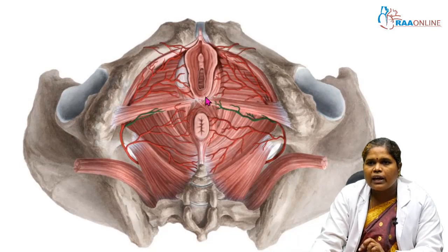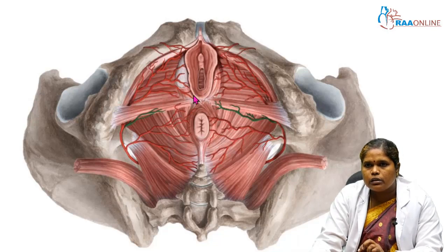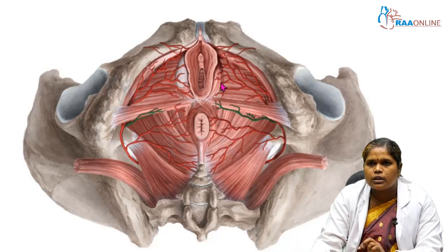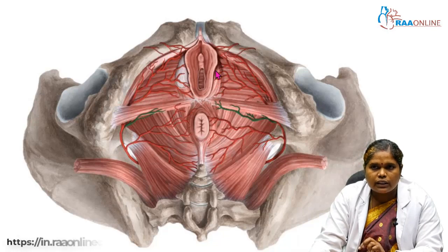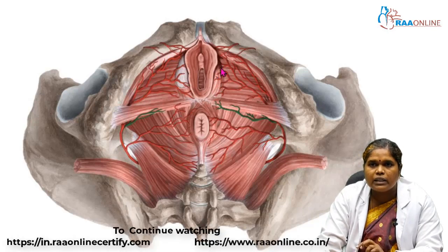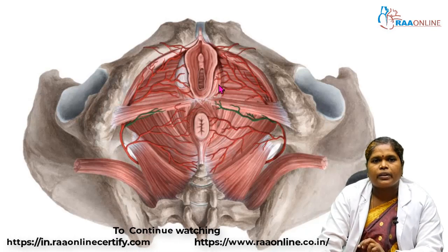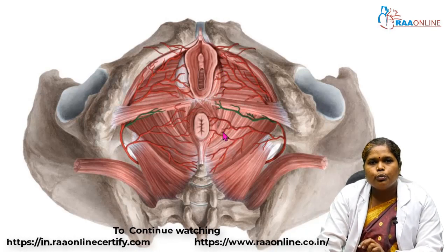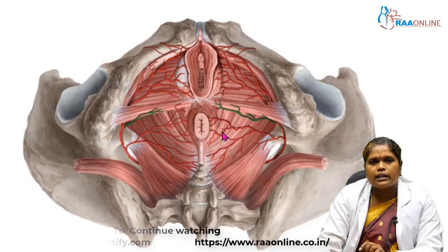We will also have the bulbospongiosus muscle. You can see this muscle here — this is the bulbospongiosus. You are seeing a female perineum, so in the case of females this bulbospongiosus muscle is a split muscle — we will have two halves. Then we will have the pubovaginalis.